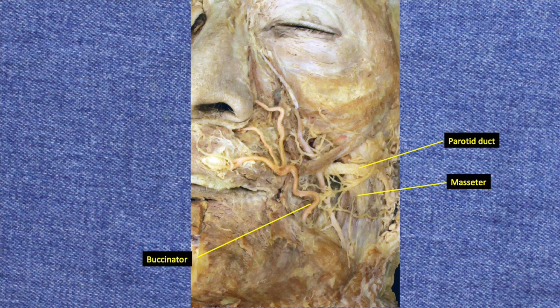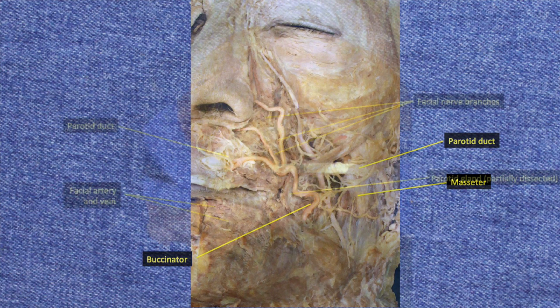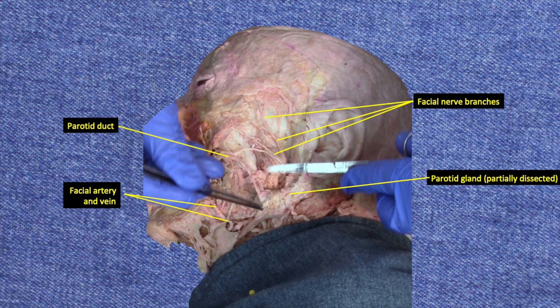In contrast, the masseter is a muscle of mastication and is innervated by the trigeminal nerve. In a different dissection, we again see the parotid gland. The parotid gland is the largest salivary gland; its secretions pass into the mouth via the parotid duct, and the facial nerve traverses through the gland. Patients who have their parotid gland removed because of cancer run the risk of complete facial paralysis on the affected side.